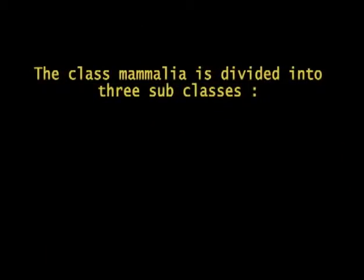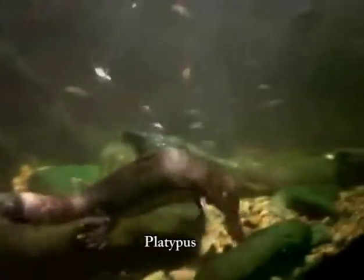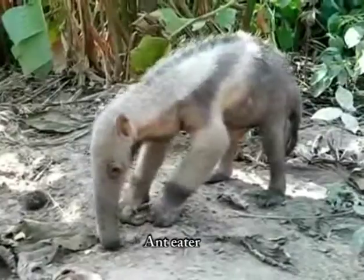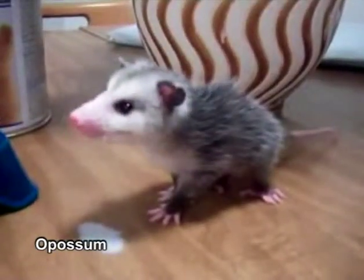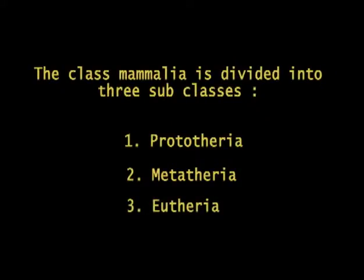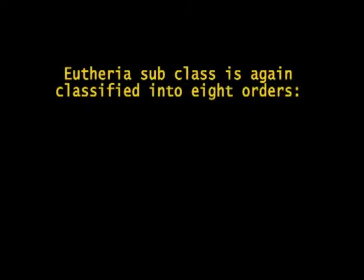The class Mammalia is divided into three sub-classes. Number one, Prototheria — animals that lay eggs and suckle, such as monotremes: platypus and spiny anteater. Number two, Metatheria — presence of marsupial pouch, such as kangaroo and opossum. And number three, Eutheria — it includes all the placental animals, including men. The Eutheria sub-class is again classified into eight orders.